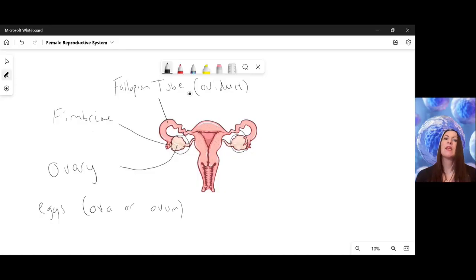I'm spelling that correctly. And so they're like these little finger-like projections and they help sweep and waft the egg into the fallopian tube. Inside the fallopian tube or oviduct, there are hair-like structures called cilia, which act like little sweeping brushes to help brush the egg along the fallopian tube.